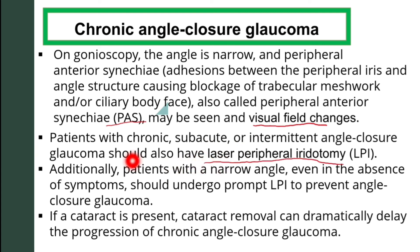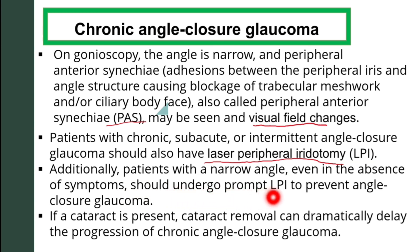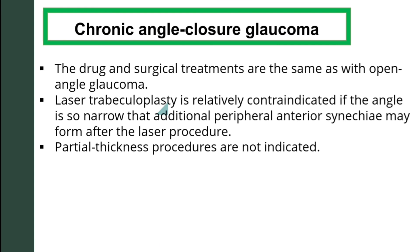Additionally, patients with a narrow angle even in the absence of symptoms should undergo laser peripheral iridotomy to prevent angle closure glaucoma. If cataract is present, cataract removal can dramatically delay the progression of chronic angle closure glaucoma. The drugs and surgical treatments are the same as those used in open angle glaucoma.